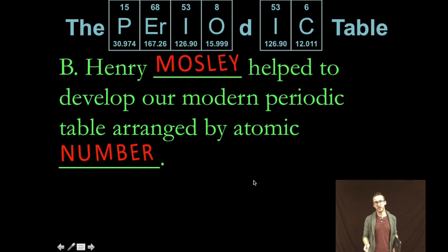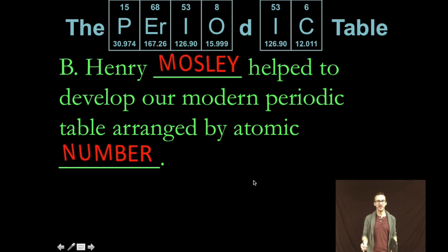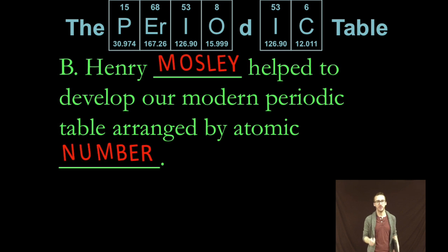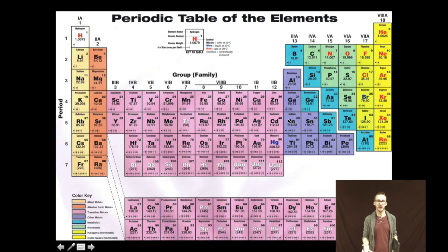Now in addition to Mendeleev you need to recognize that Henry Moseley helped to develop our modern periodic table by arranging the elements by atomic number instead of by atomic mass. So if you take a look at the modern periodic table of the elements you'll notice that in fact it is organized by atomic number. And when we organize it like that we get these beautiful patterns that fall into place.